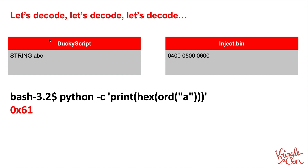Let's add more input to the ducky script to see what happens. I put 'abc' — all it's going to do is type abc — and the inject.bin comes out as 04 05 06. I immediately knew that was not the ASCII codes for a, b, and c. I used Python to verify: the hex value of 'A' is 0x61, and 0x61 is not 0x04. Having watched a lot of videos about USB devices and HID attacks, I knew we were probably dealing with something called scan codes.